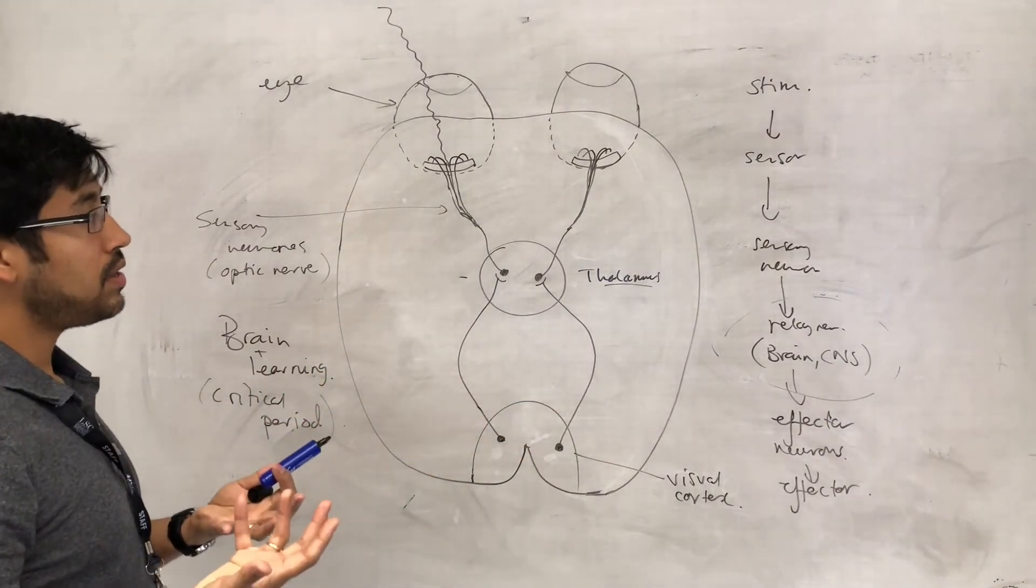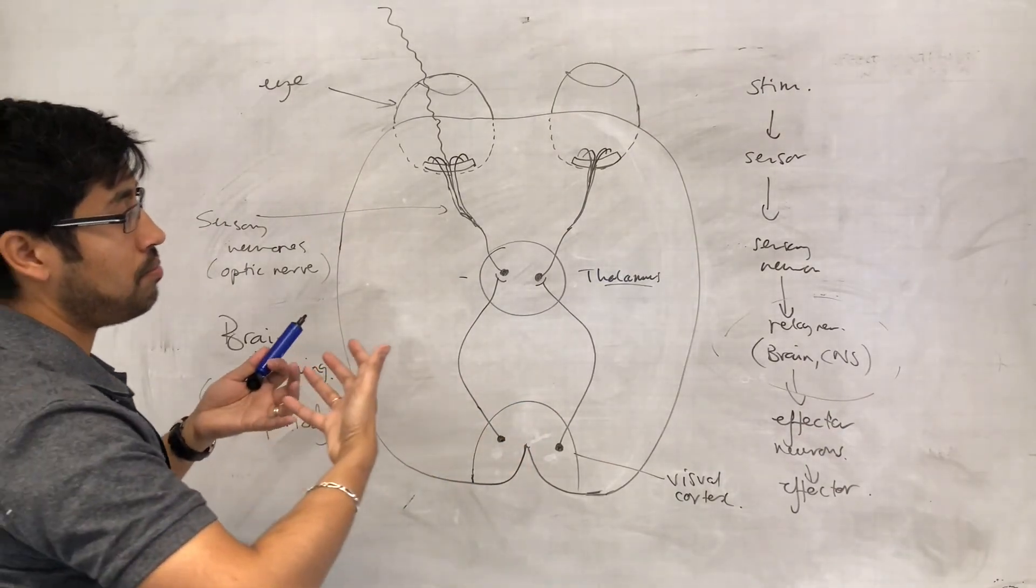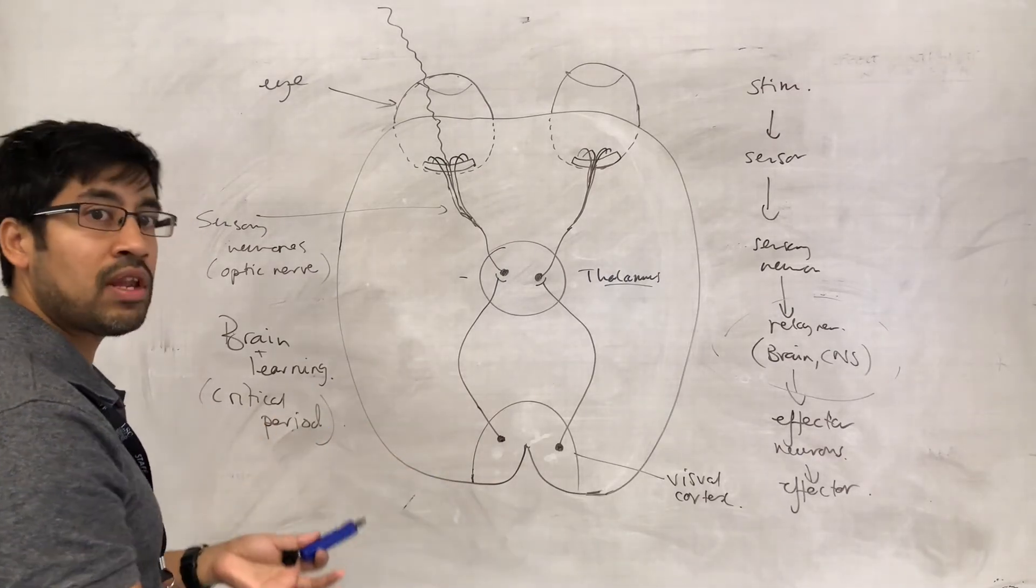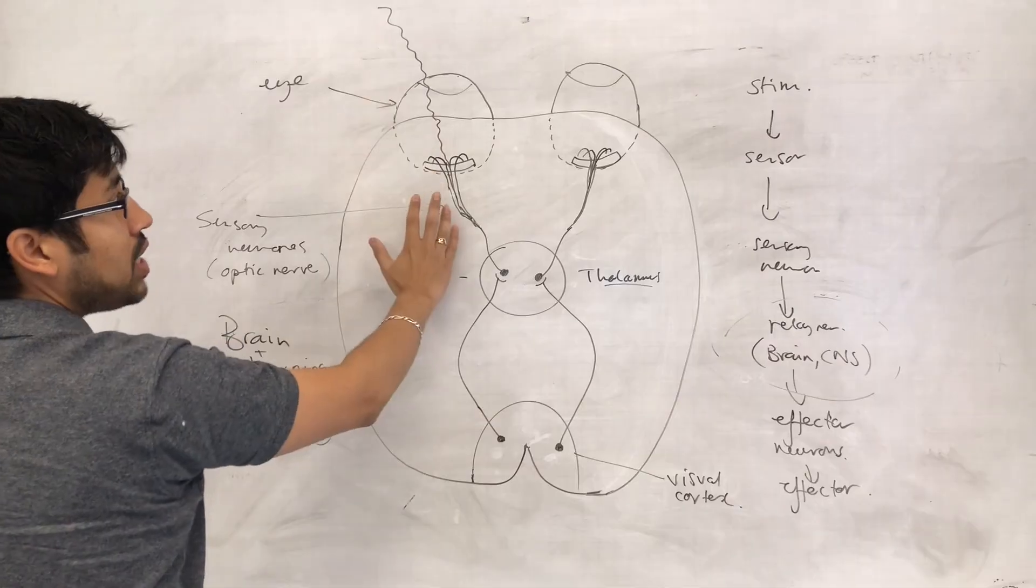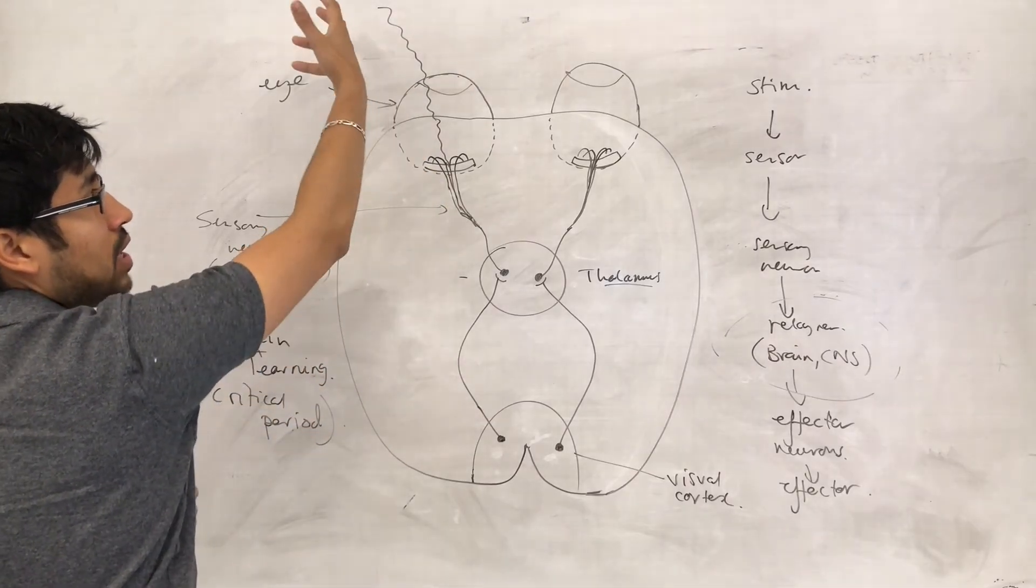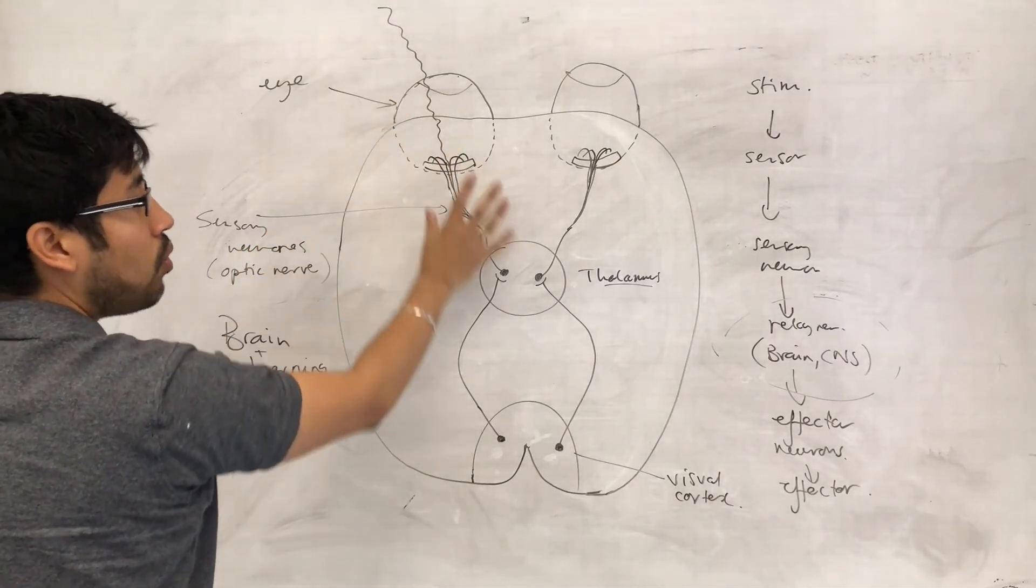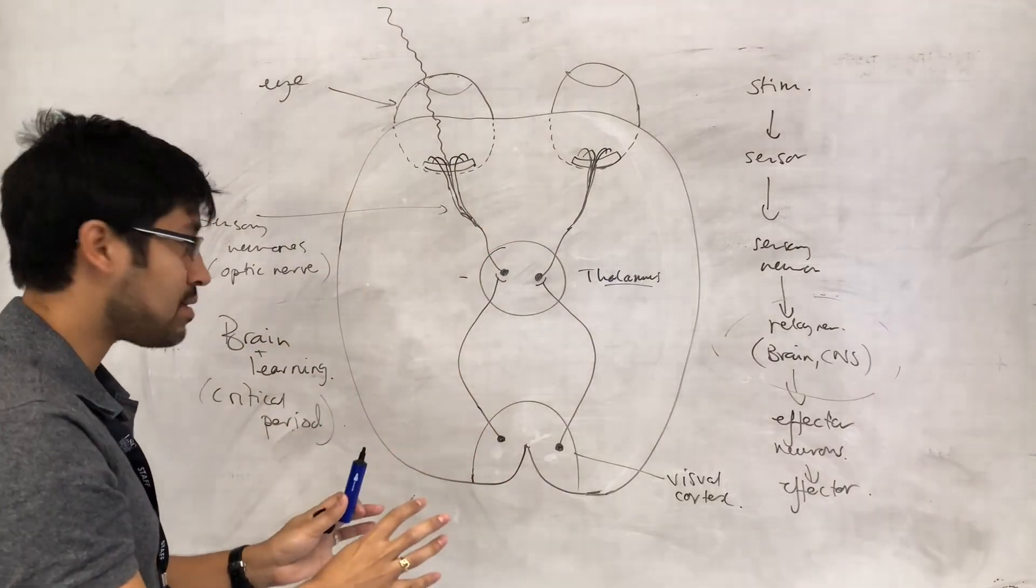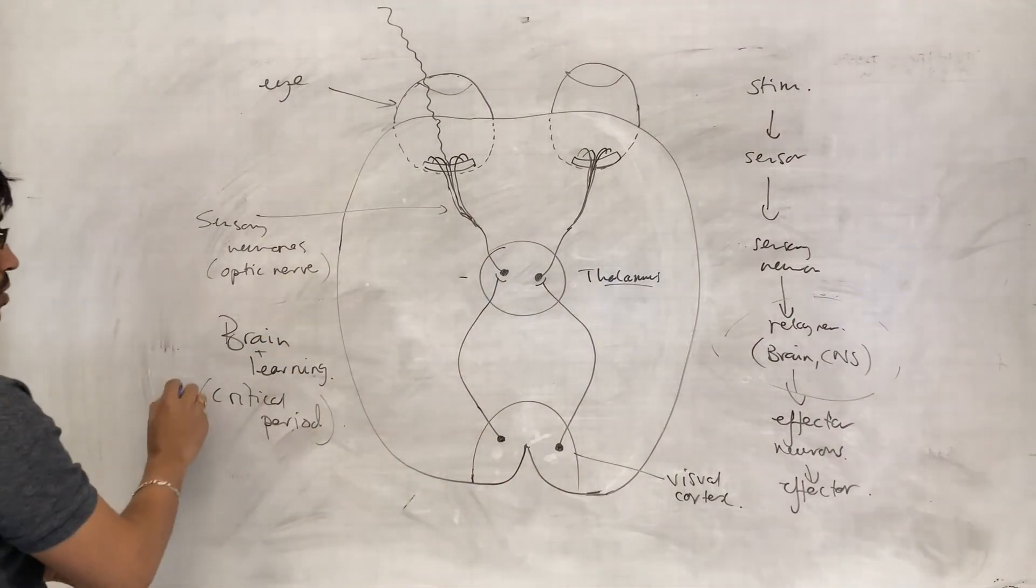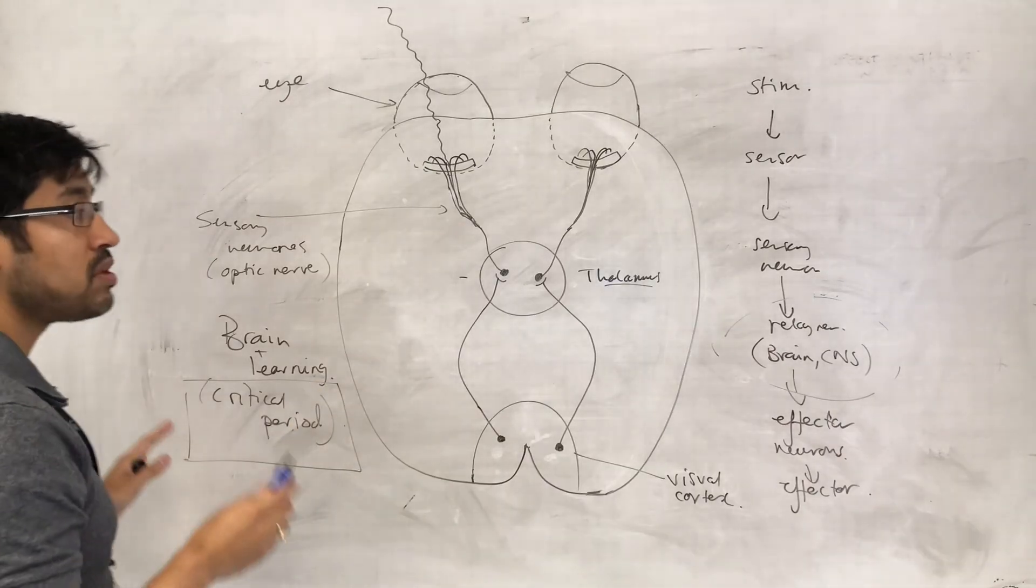It does require stimulation. It does require a little bit of an environmental input in order for this system to be wired up the way that it is. That's the key point about the critical period and visual development.